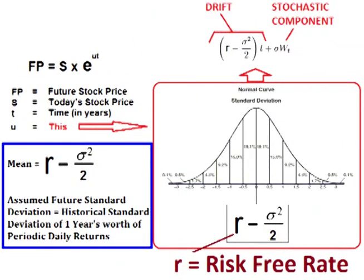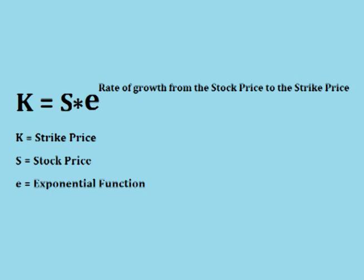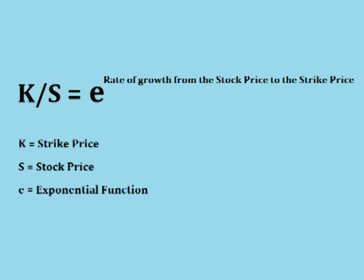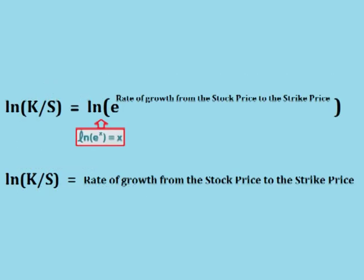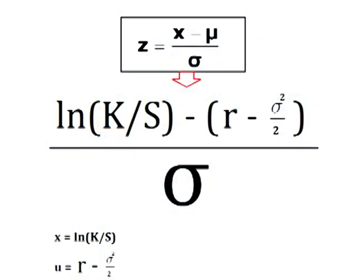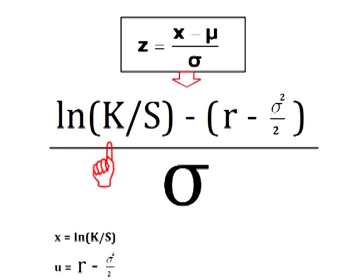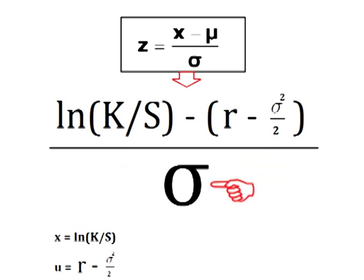Let's break that down. The probability of what the future rate of growth will be is represented by a normal distribution graph using the drift — the risk-free rate minus half the variance over time — as the mean. We need to find the rate of growth from the stock price to the strike price. Strike price equals stock price times E raised to the rate of growth from the stock price to the strike price. Dividing both sides by the stock price and taking the natural log of both sides gives us: the natural log of the strike price divided by the current stock price equals the rate of growth from the stock price to the strike price. The raw data point is that natural log value, the mean is the risk-free rate minus half of the variance, so the z-score is the natural log of the strike price divided by the stock price, minus the risk-free rate minus half of the variance, divided by the standard deviation of one year's worth of periodic daily returns.